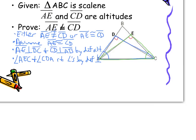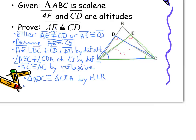So right now I have those two right angles. I assumed that AE and CD are congruent, so I have a leg of each right triangle. I can also prove that my hypotenuse is congruent to itself by the reflexive property. So now I have a hypotenuse, a leg, and a right angle for each triangle — I can prove those triangles congruent by Hypotenuse-Leg. Now that I have my two triangles congruent, I can use CPCTC to prove angle DAC and angle ECA are congruent.